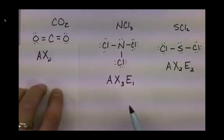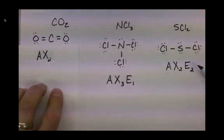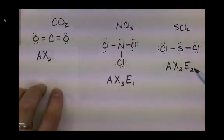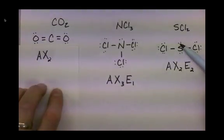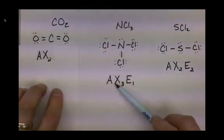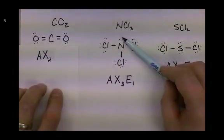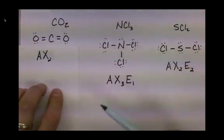One thing you should notice is that the subscripts are going to represent how many things are attached to the central atom. For sulfur dichloride, we have a total of four from our subscripts — that means we have four total lone pairs and atoms on our central atom. Similarly, for nitrogen trichloride we have a total of four: three atoms bonded to the central and one lone pair of electrons on the central.